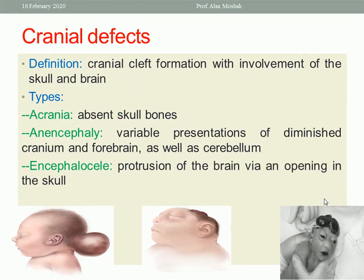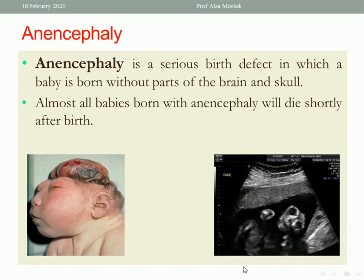Cranial defects involve cranial cleft formation with involvement of the skull and brain. They include acrania, where the skull bones are absent, and anencephaly, with variable presentation of a diminished cranium and forebrain, as well as encephalocele — protrusion of the brain via an opening in the skull. Anencephaly is a serious birth defect in which the baby is born without parts of the brain and skull. Almost all babies born with anencephaly will die shortly after birth. This is anencephaly diagnosed early in pregnancy by ultrasound, showing a frog-like face.